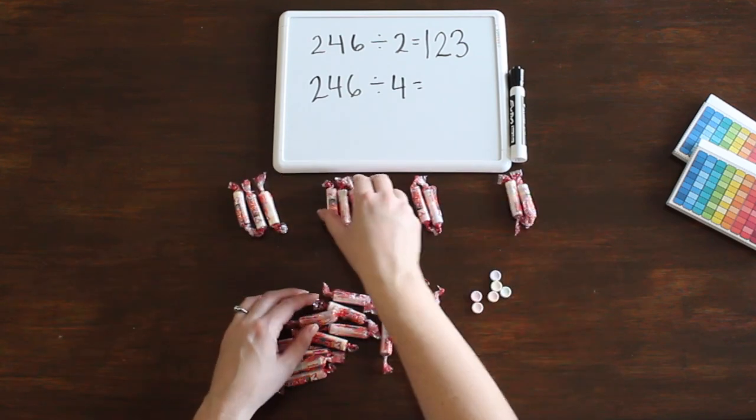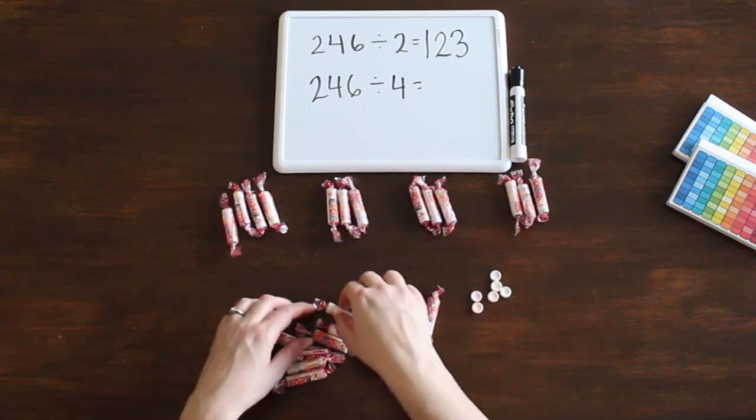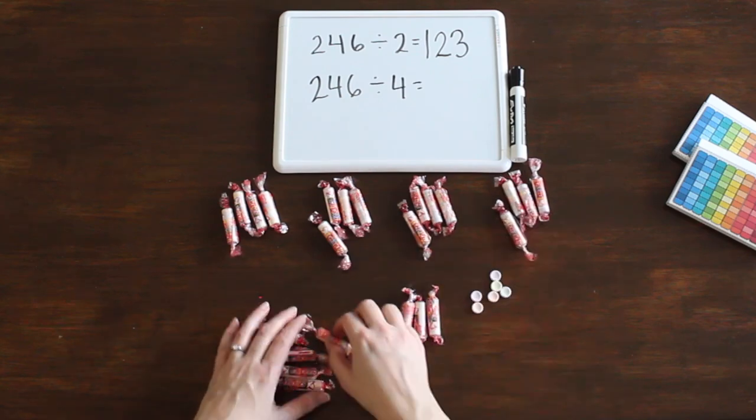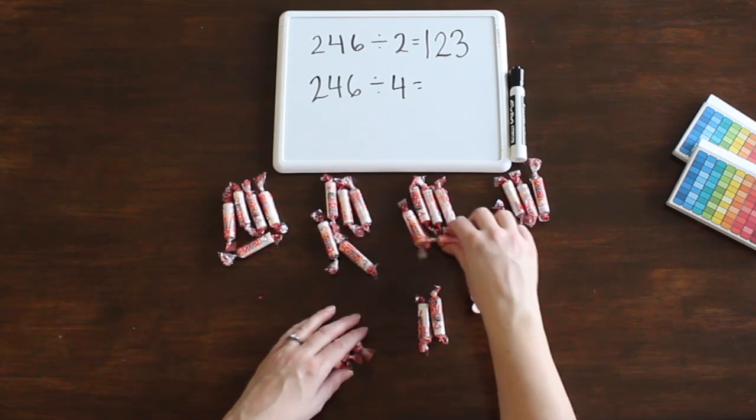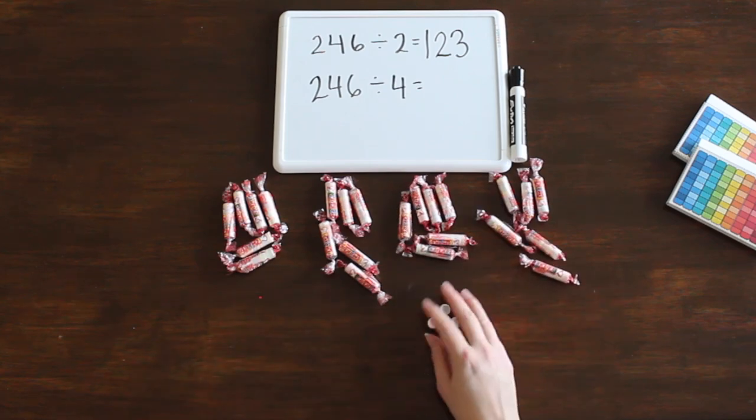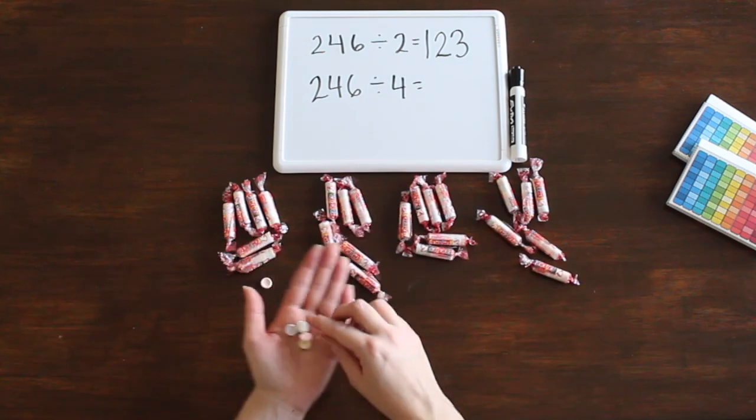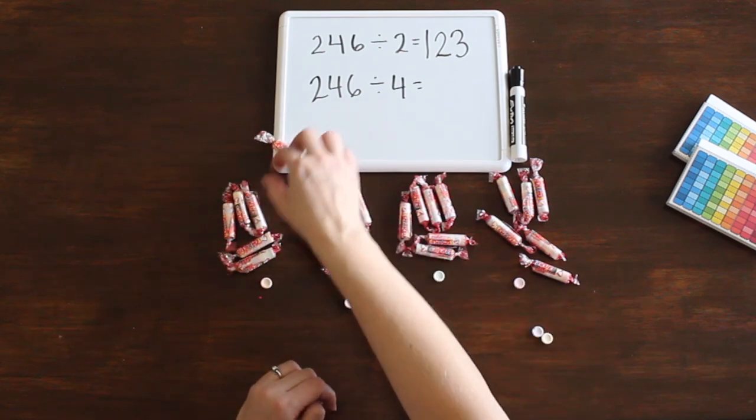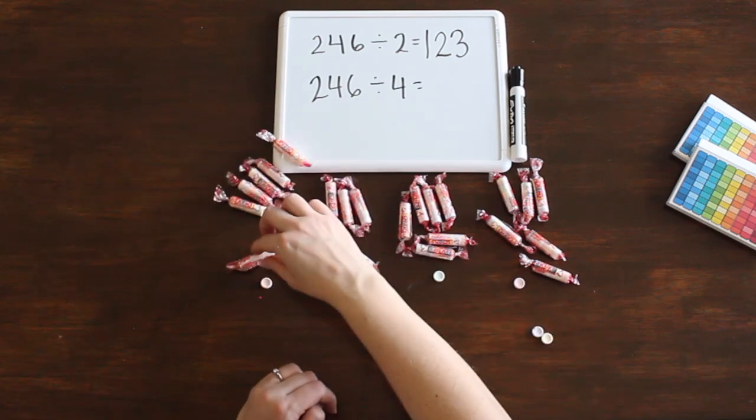In we open up the boxes and turn each hundred box into 10 rolls. Now we will have 24 rolls of 10. After we divide the rolls up, if there were extra rolls, we could open the rolls and divide those out. Once again, we know our answer by counting how many hundreds, tens, and ones we have.